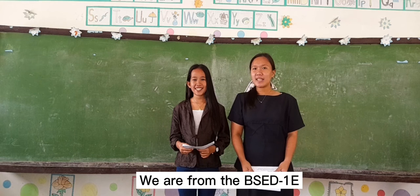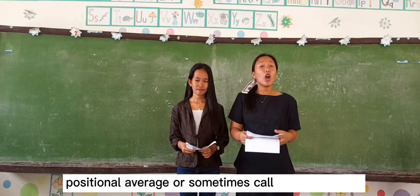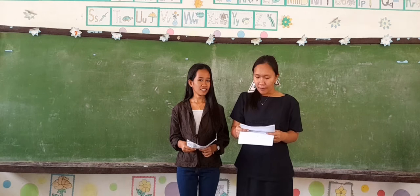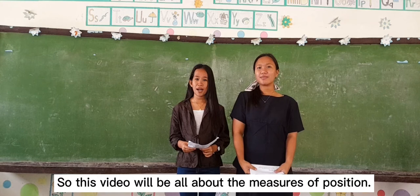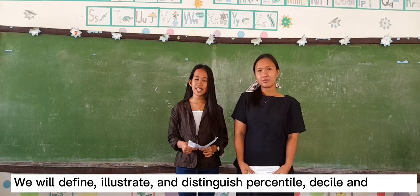The lesson we are going to discuss is about the different positional averages, sometimes called quantiles. Quantiles are the extension of the median concept where the data are divided into several parts. This video will be all about the measures of position. We will define, illustrate, and distinguish percentile, decile, and quartile.